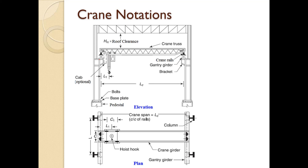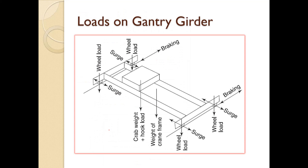Here you can see the gantry girder — this is the typical drawing. These are the gantry girders, and the black color above is the rail on which the crane girder runs. The crab is visible here, and this is particularly the top view.